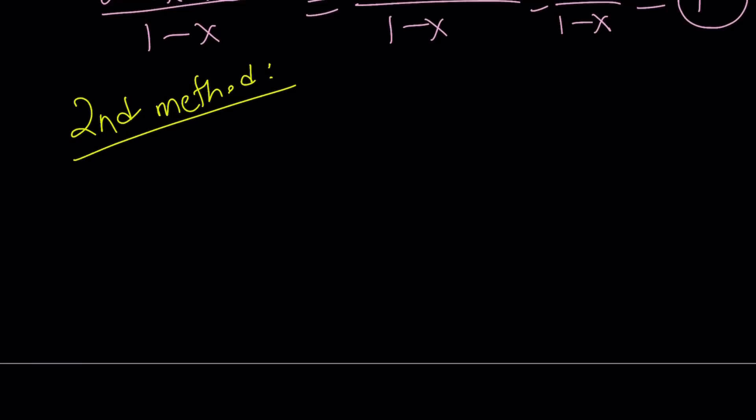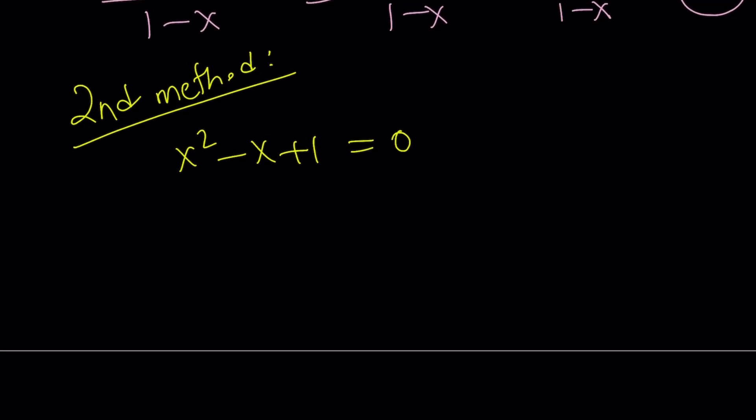So our second method depends on a totally different approach. I'm going to be using complex numbers for this. I hope you like them. If not, start liking them because they are cool. So from quadratic formula, negative b plus minus the square root of b squared, 1 minus 4. That's going to give us negative 3. So the square root of negative 3 can be written as square root of 3i with the plus minus sign because there are two square roots. So we can write the solutions as 1 plus minus square root of 3 times i divided by 2.